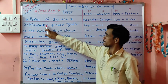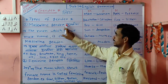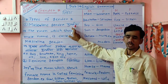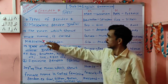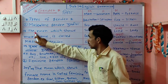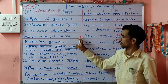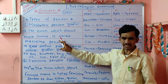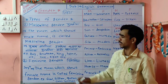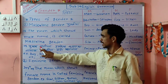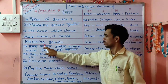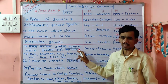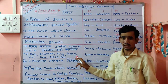So what is the first? Masculine gender. What does it mean in Marathi? Pullinga. The definition is: the noun which shows a male name or male sex is called Masculine gender. In Marathi, the noun referring to purush jati is called Pullinga.